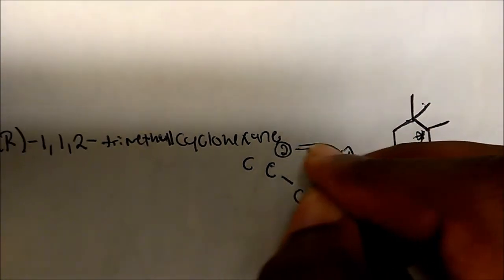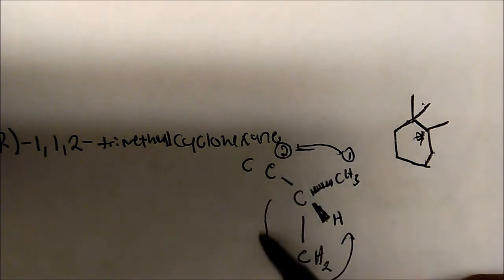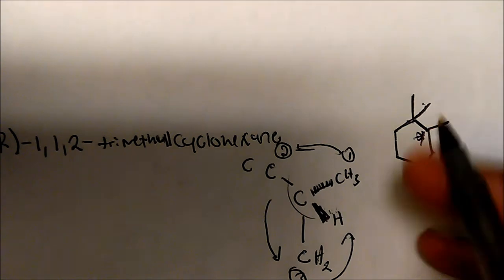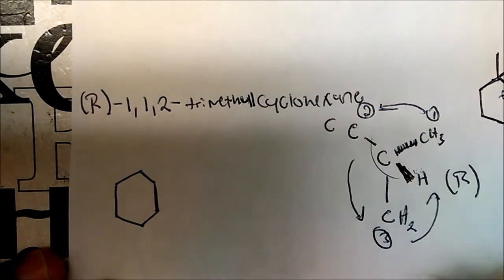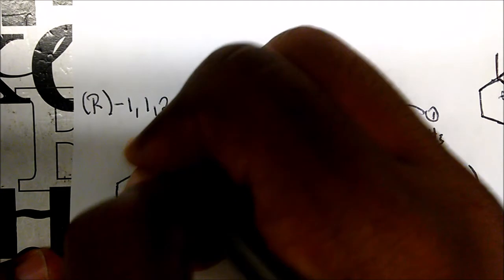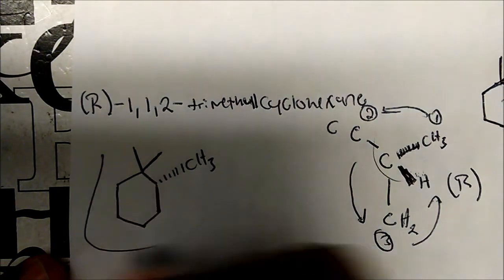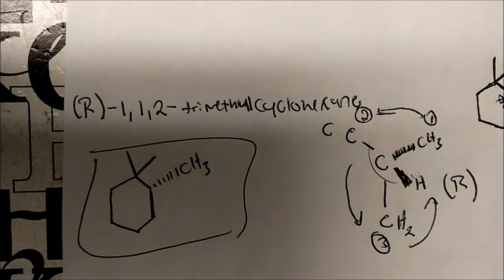So this goes from one to three, so this is going S right now. But because our hydrogen is not going away from us, we take the reciprocal and this will be R. So the molecule will look something like this, with the CH3 going away, and this will be the configuration of R-1,1,2-trimethylcyclohexane.